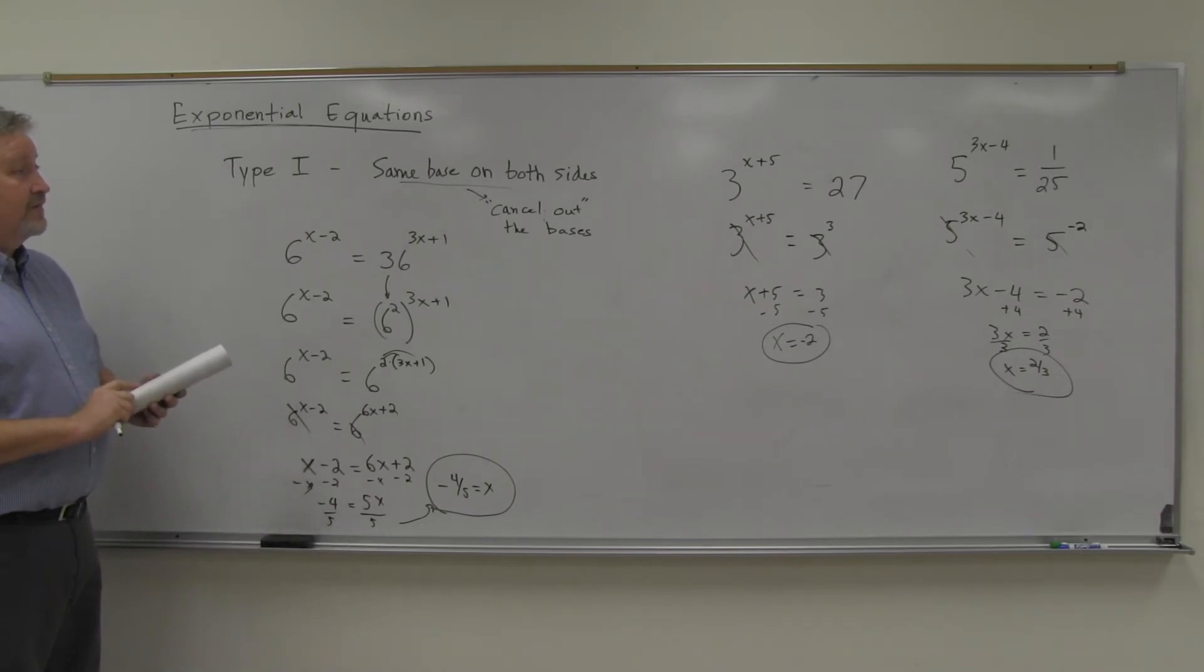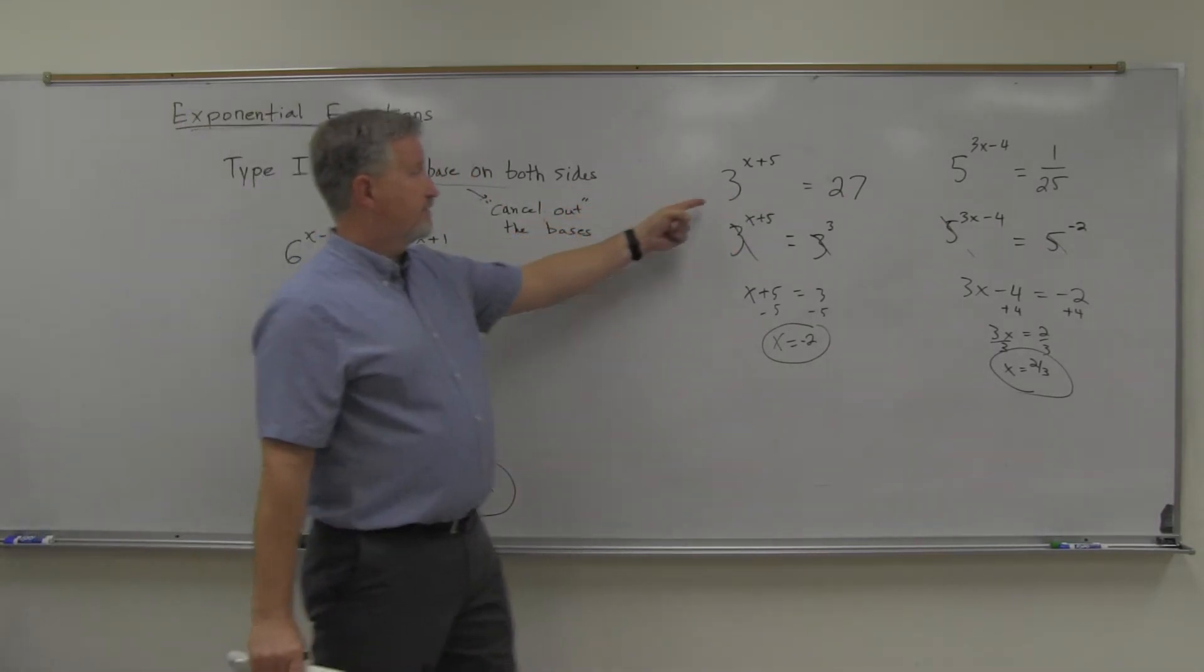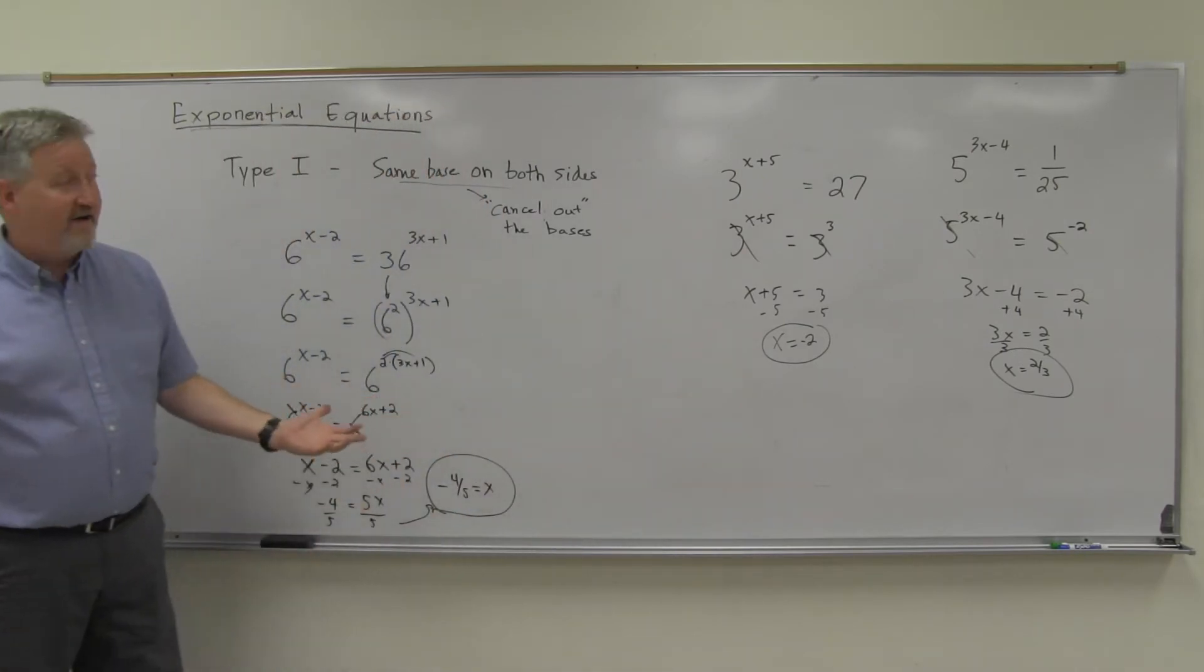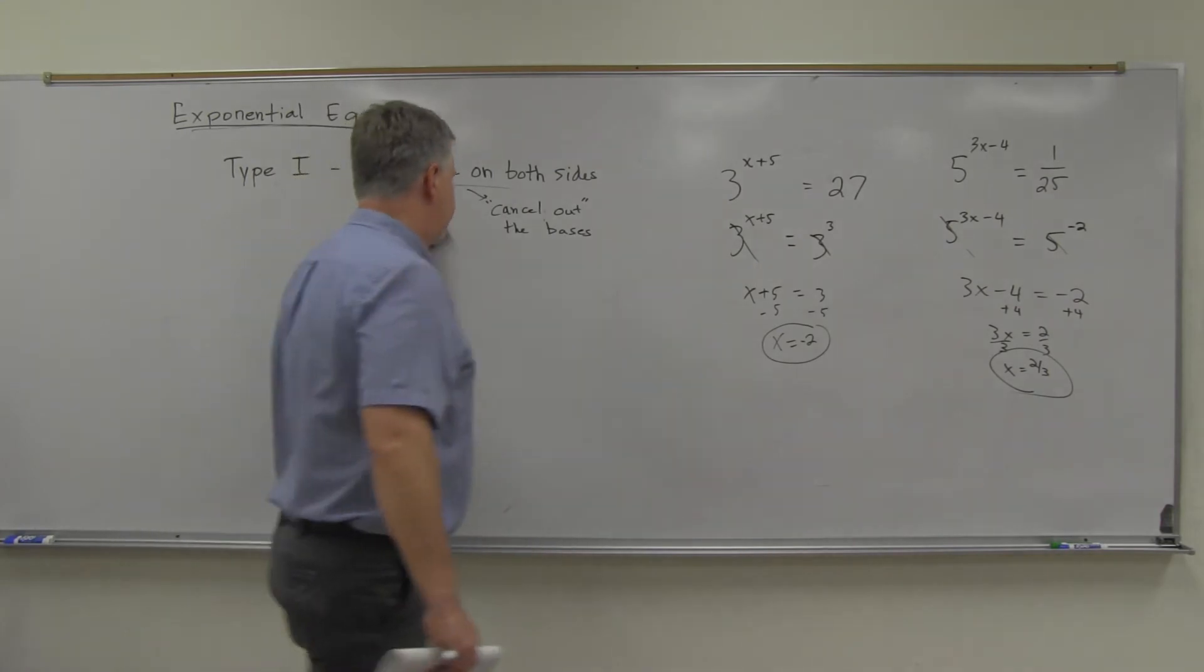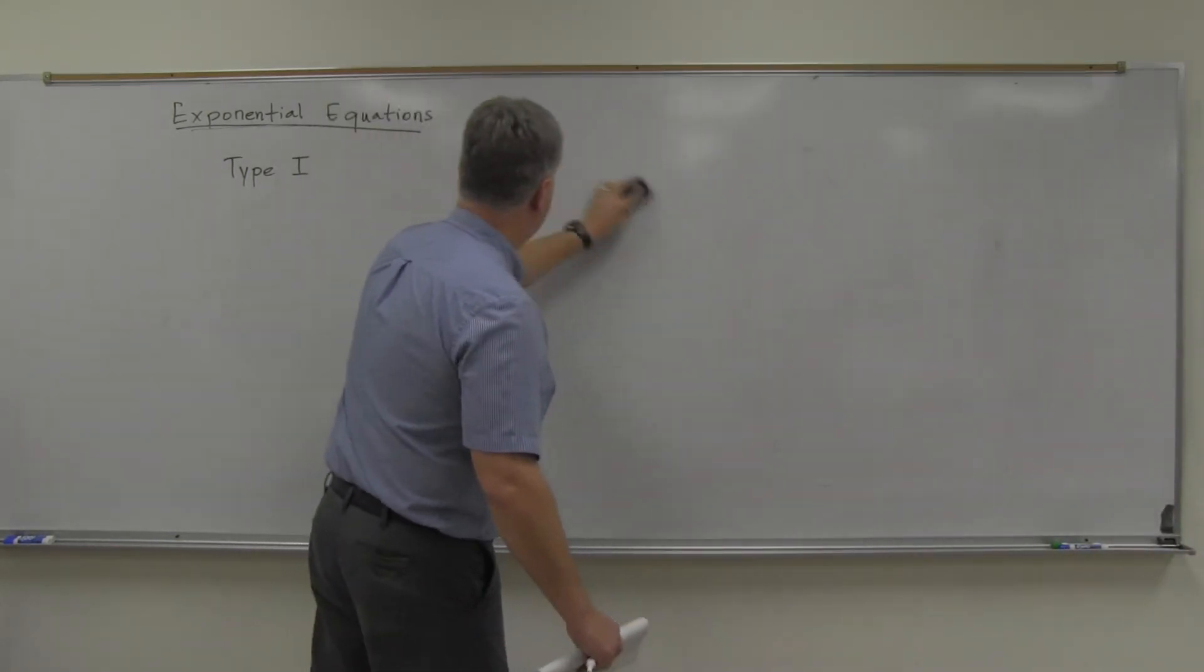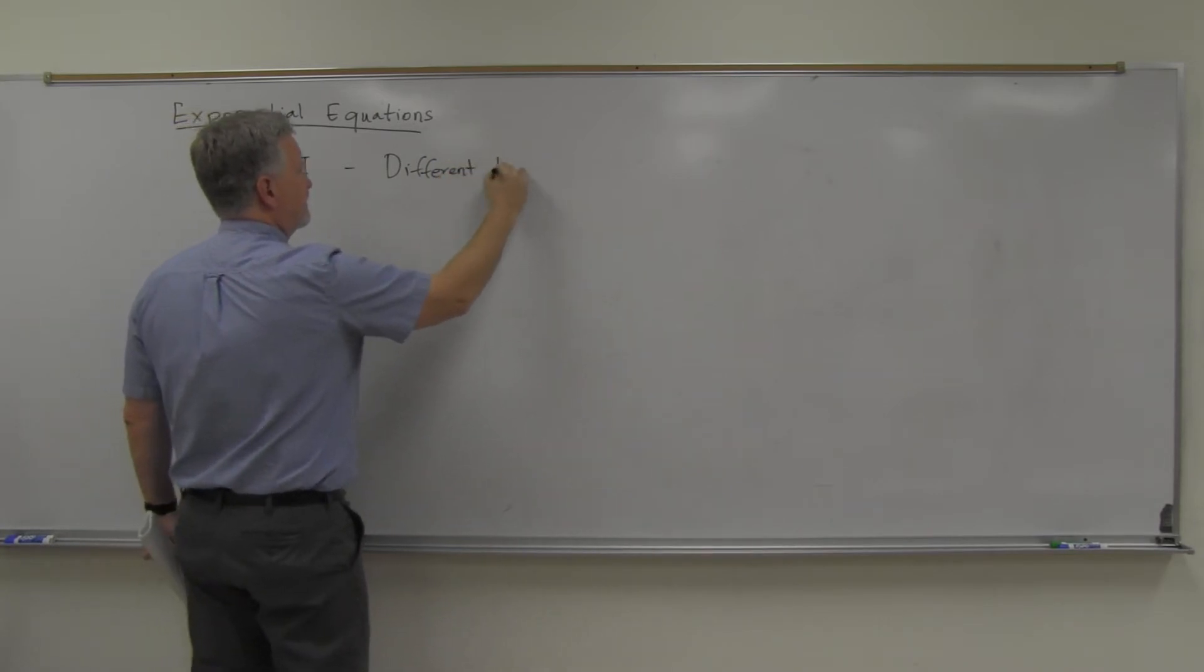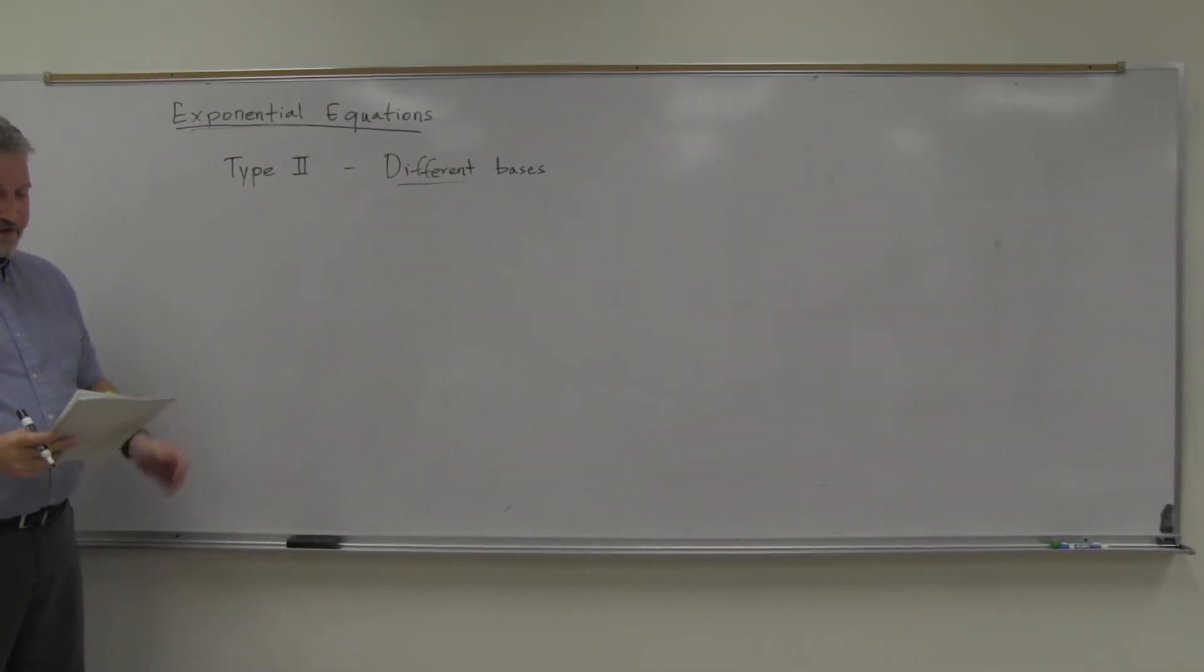So that's the same base on both sides. Those are very nice. However, as you can probably expect, that may not happen each and every time, where we have the same base on both sides, even on these simple ones. It would be very easy to get this equation where we couldn't do this because we could put in like 25 here. 3 to the x plus 5 equals 25. Well, 25 is not going to be a nice power of 3. It's a nice power of 5, but not a power of 3. So it's very easy to see there that we won't always get this to happen. So that brings up type 2 then.